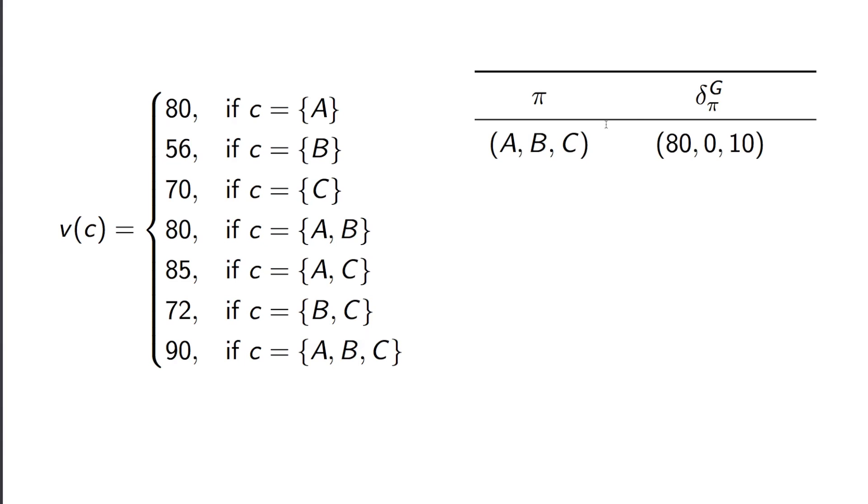So what do I mean by that? I mean that if we look at this permutation, so A, then B, then C, when A turns up, A pays the value of the coalition A is in by herself. A was Alice. So that's 80.